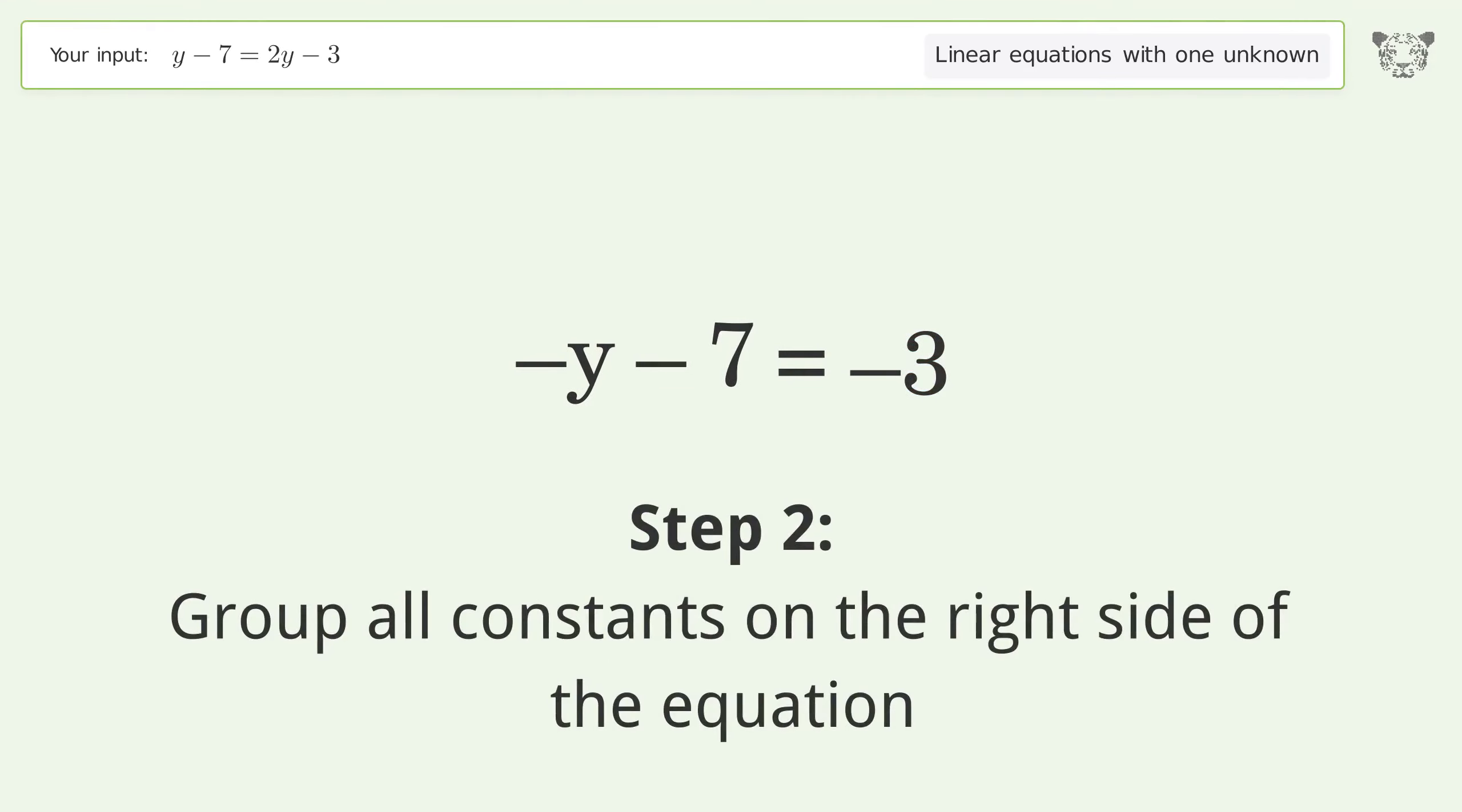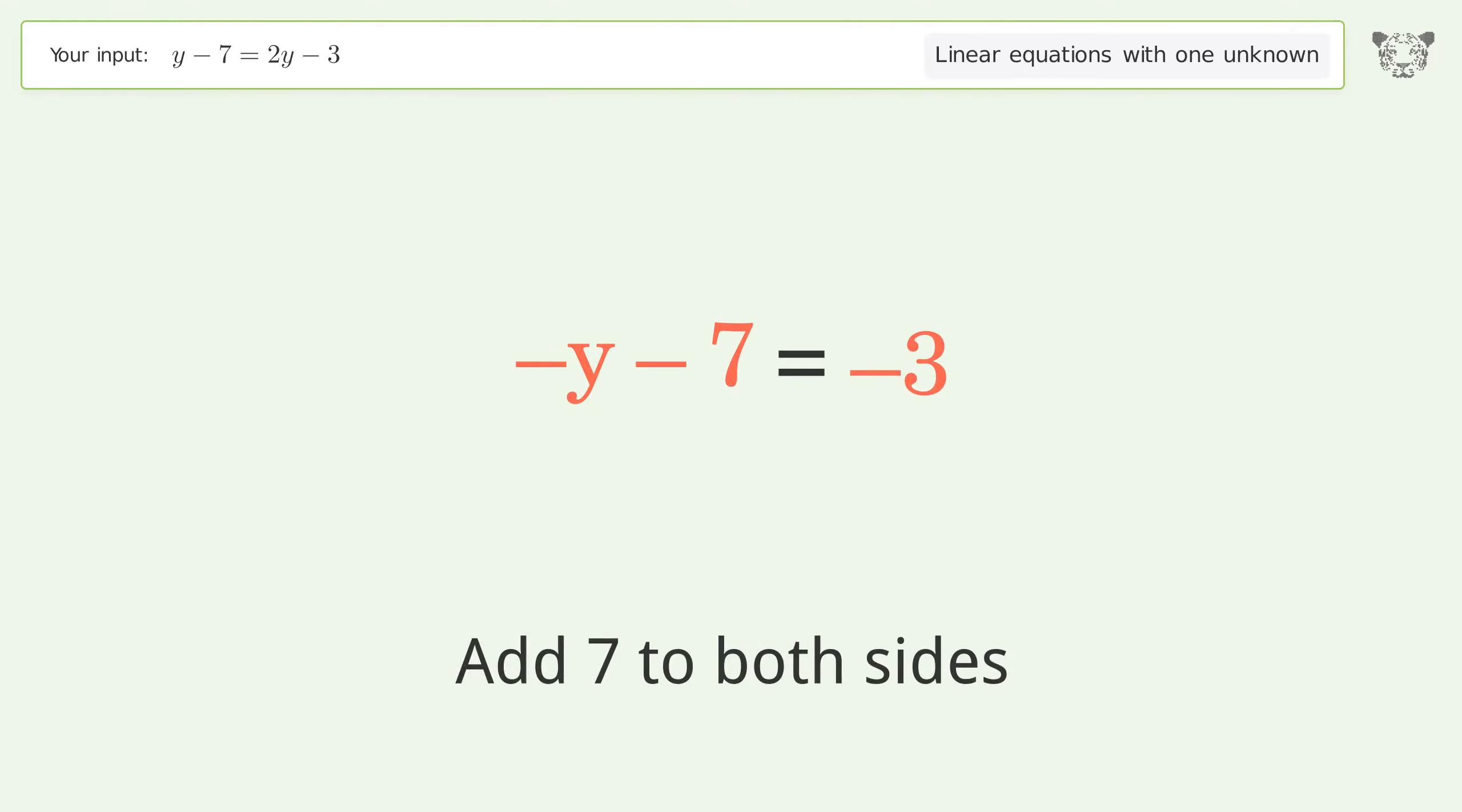Group all constants on the right side of the equation. Add 7 to both sides. Simplify the arithmetic. Improve the arithmetic.